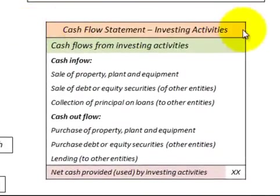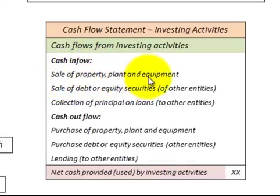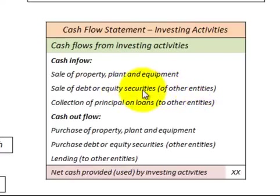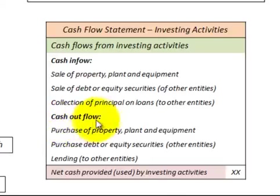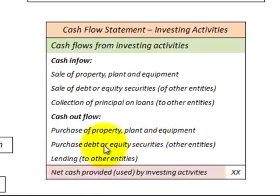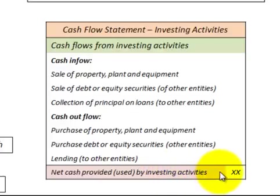Looking at our cash flow statement for investing activities, first we'd look at cash inflows — such as the sale of property, plant, and equipment, the sale of a debt or equity security of another entity, or collecting principal on a loan from another entity. Cash outflows would be the purchase of property, plant, and equipment or the purchase of debt or equity securities. The difference between cash inflows and outflows is the net cash provided or used by investing activities.